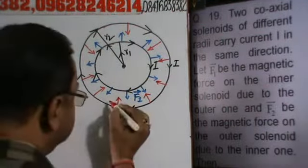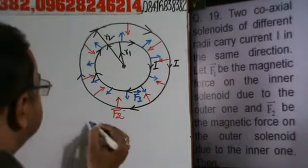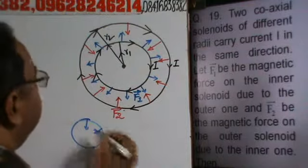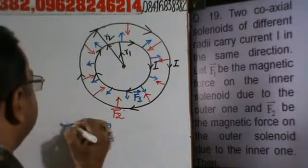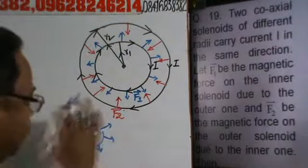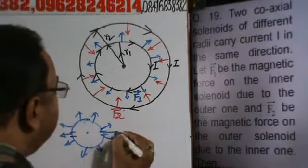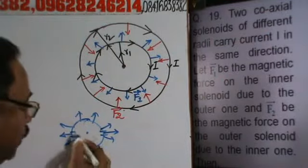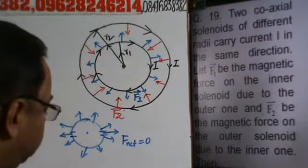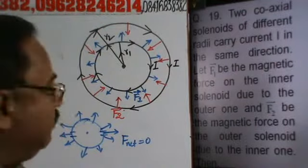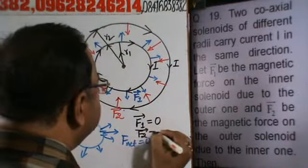Now consider any circular conductor: if the force on each segment is directed either toward the center or away from the center, then for every segment, its diametrically opposite counterpart has a force in exactly the opposite direction. These forces cancel each other out. Therefore, the net force F_net is zero. This gives us vector F1 equal to 0 and vector F2 equal to 0.